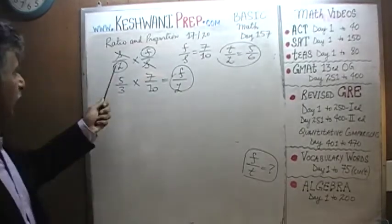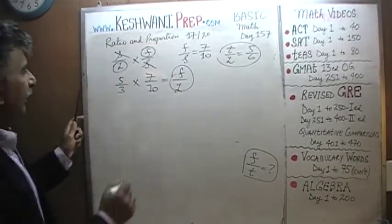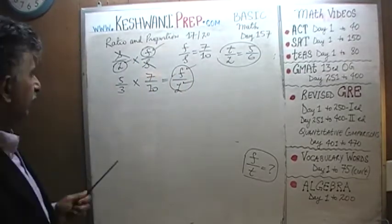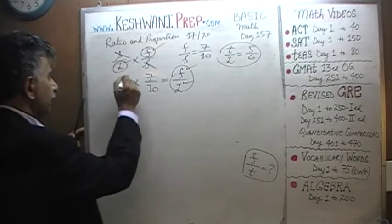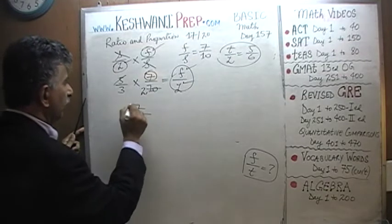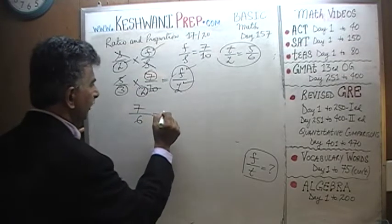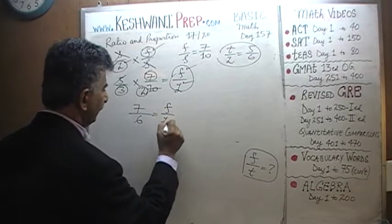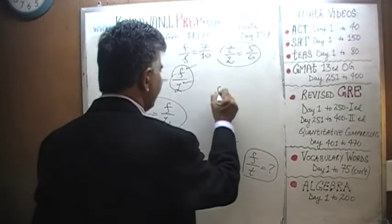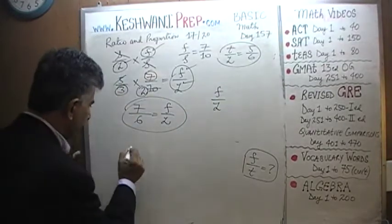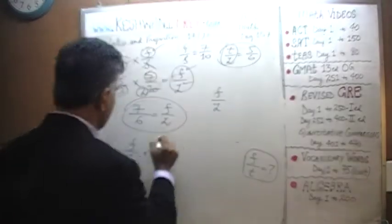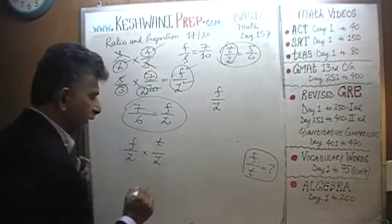Let's finish up this process. If we multiply F to S (7 to 10) by S to L (5 to 3) together, we get F on top and L on the bottom. We have a 5 and a 10 — dividing top and bottom by 5 gives us 2. So the result is 7 over 6, meaning F to L — the ratio of 1st to last — is 7 to 6.